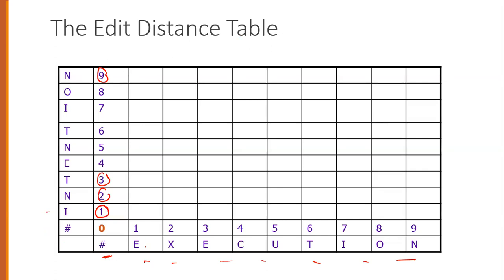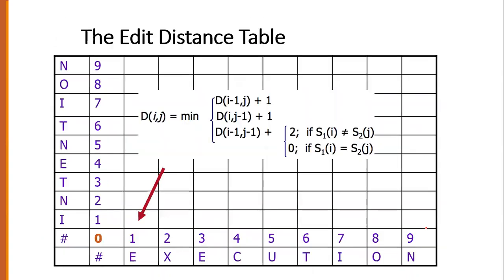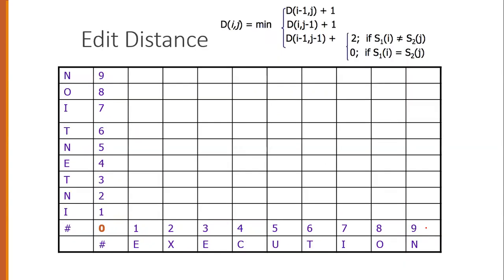If we have a target null string and we need to generate 'execution', we must insert E, then X, cost 1+1=2. E, X, E would be 3 insertions. Eventually, generating the full word 'execution' from the null string has a cost of 9. We then compute all the next cells similarly.